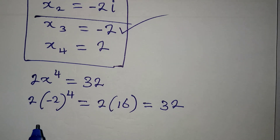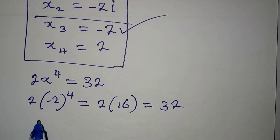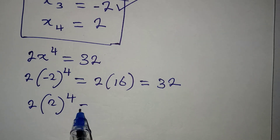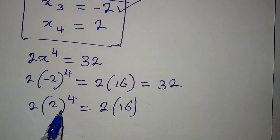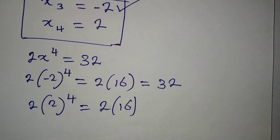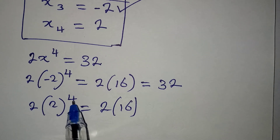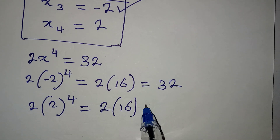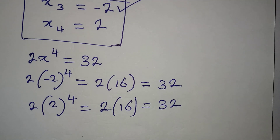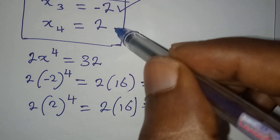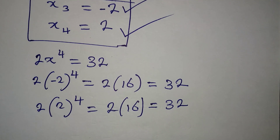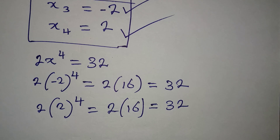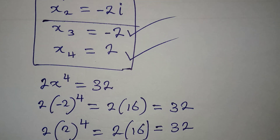Then if you go over to the second real solution where x equals 2, it will be 2 into 2 to the power of 4. This is going to be 2 multiplied by 16, because 2 to the power of 4 is 16 — and remember that the bracket means that only what is inside raises to the power of 4. So this gives us 32 again, meaning that the real solutions here are confirmed.